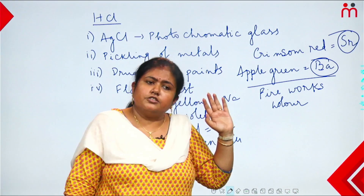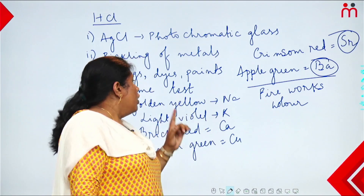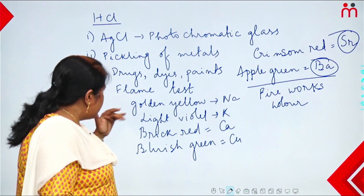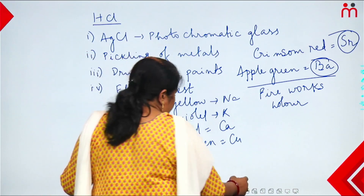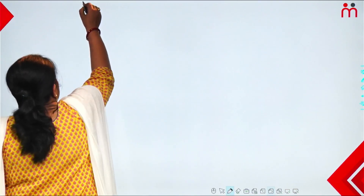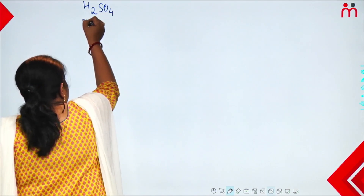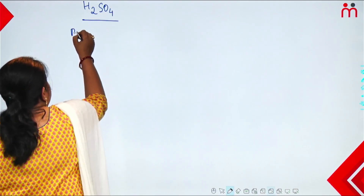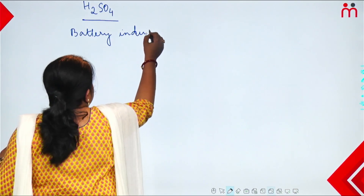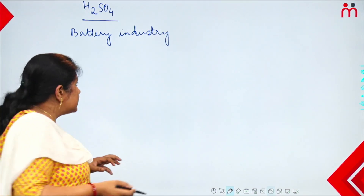Now let's discuss uses of sulfuric acid (H₂SO₄). After hydrochloric acid uses, we move to sulfuric acid uses. The first and very very important use of sulfuric acid is in batteries — the battery industry uses sulfuric acid on a huge scale.